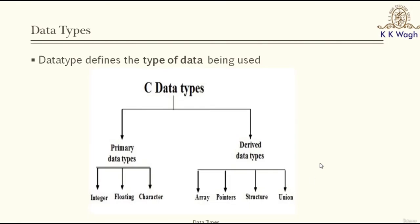C supports different data types, classified as primary data types and derived data types. The primary data types are integer, float, and character. The derived data types are arrays, pointers, structures, union, etc.